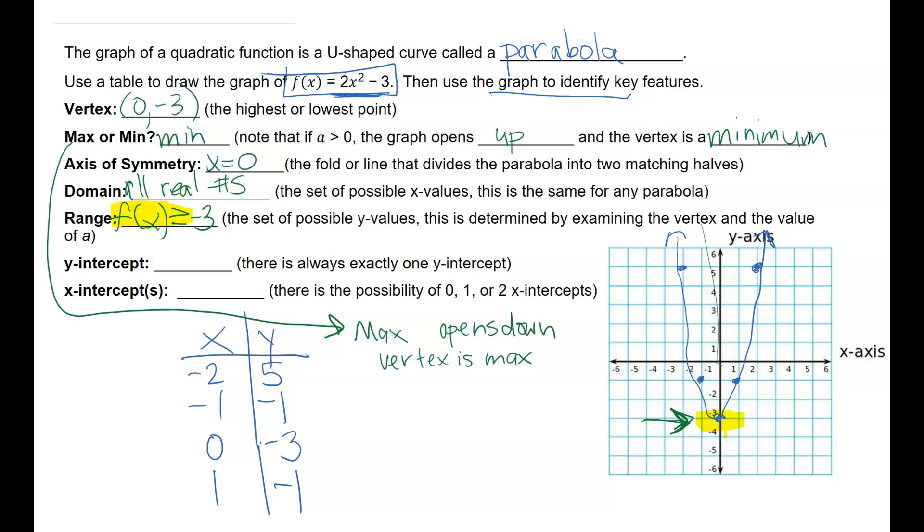The y-intercept, and notice there is always exactly one y-intercept. So the y-intercept is where it touches the y-axis. In this particular situation, the y-intercept happens to be the vertex.